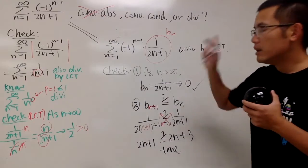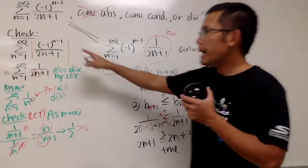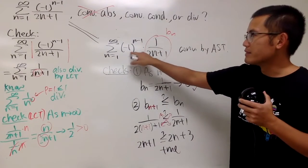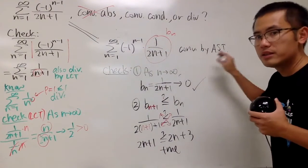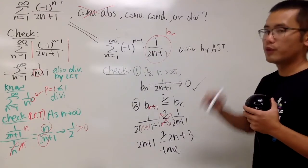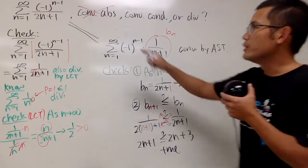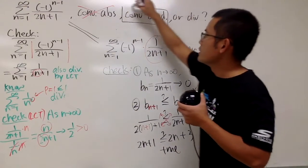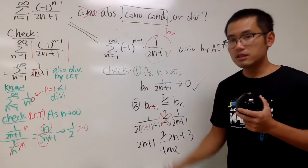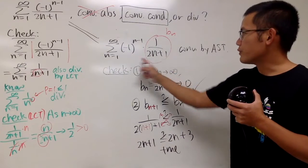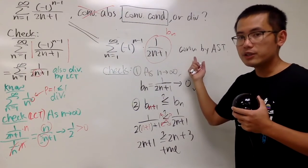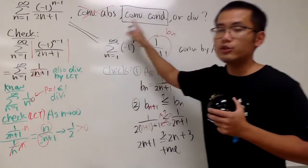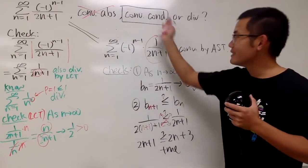Therefore, the absolute value version didn't converge, but the original alternating version — with (-1)^(n-1) — does converge by the alternating series test. So this series converges conditionally, and that's the definition of conditional convergence: the original version converges, but the absolute value version does not.